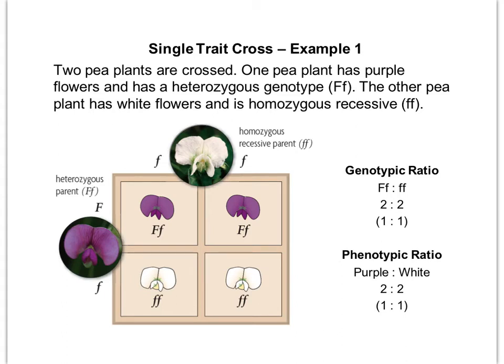We can look at what's called the genotypic ratio, which is the ratio of heterozygous offspring to homozygous recessive offspring — that's going to be a two to two. Any time we can reduce down to a lower number, we can do that, so let's change that to a one to one ratio.